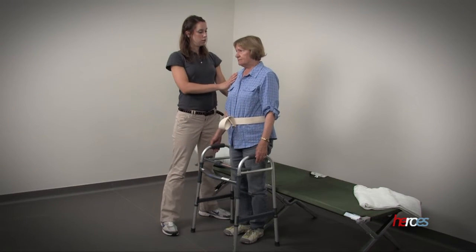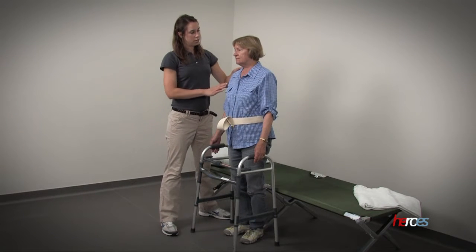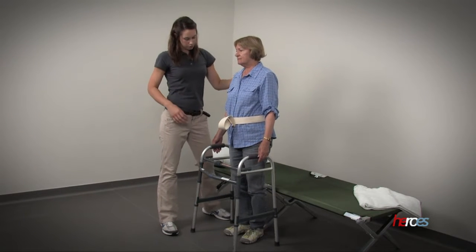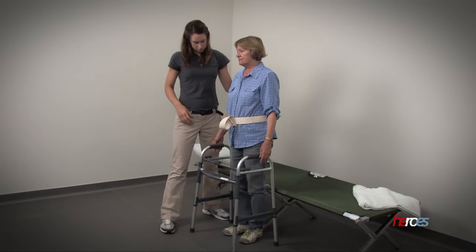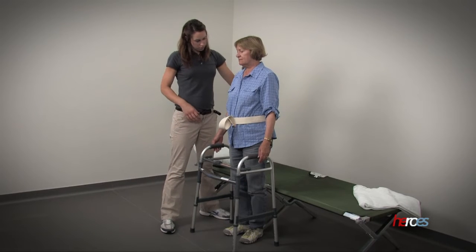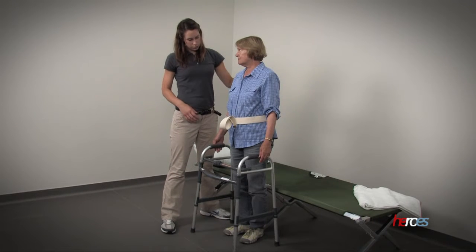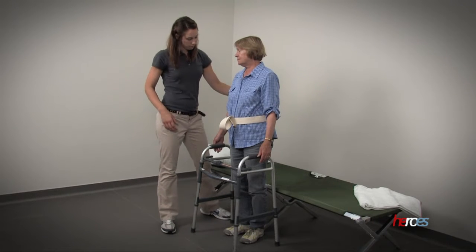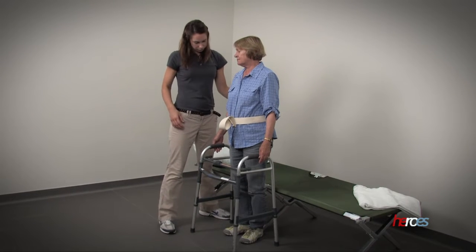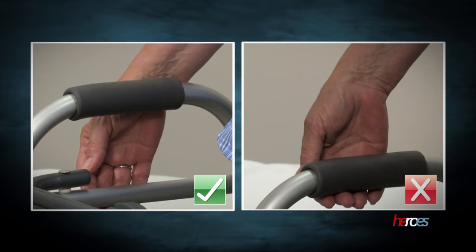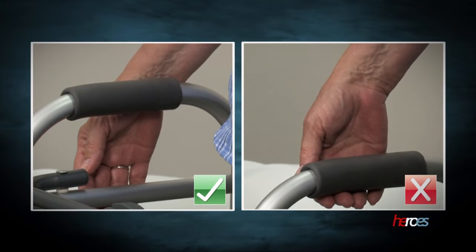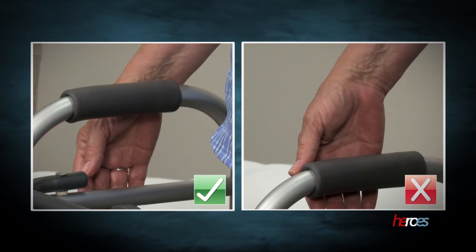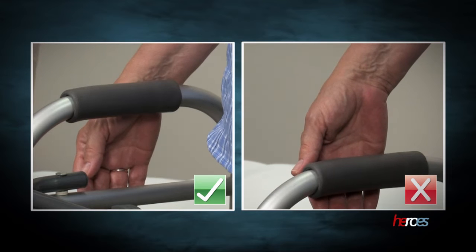To assess proper height of the walker, instruct the individual to stand up straight and drop their hands to their sides. Make sure the individual relaxes their shoulders. With any assistive device, the level of the handles should fall at the level of the individual's wrist crease.